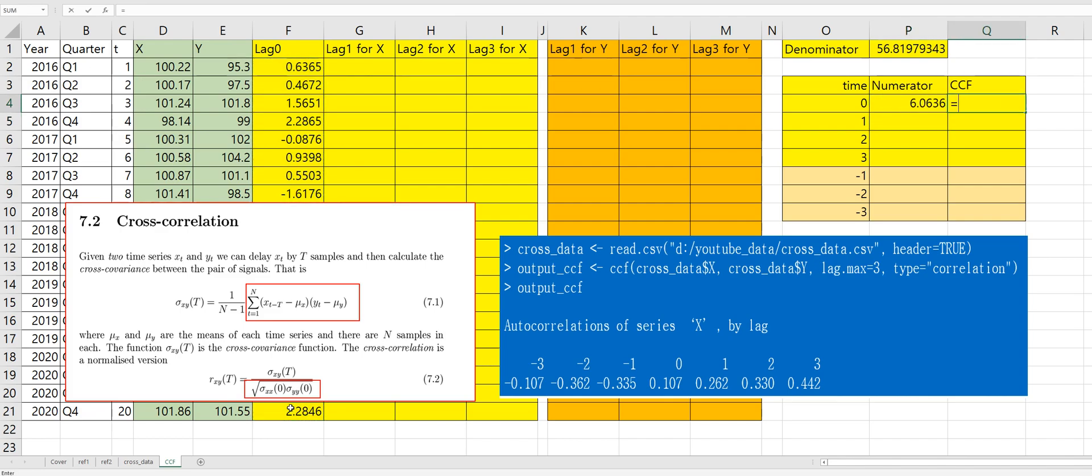Then, CCF can be calculated by this one divided by denominator. Right? This one. So, for lag 1, at this value, next.